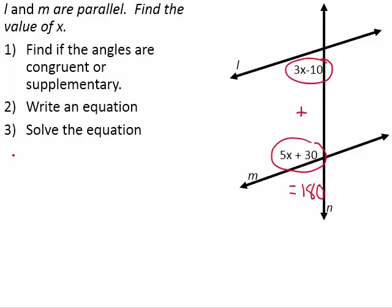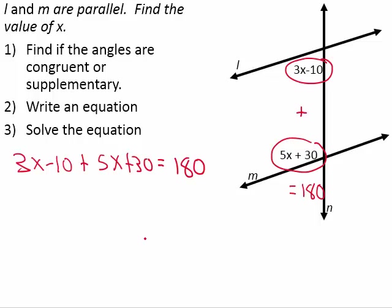So, 3x minus 10 plus 5x plus 30 is going to be equal to 180 degrees. To solve the equation, we're going to combine our like terms. 3x plus 5x gives us 8x. Minus 10 plus 30 gives us plus 20, equal to 180 degrees.